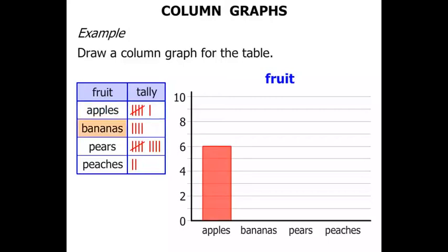Now for bananas you can see there's 4 in the tally. So above bananas in our graph we draw a column that goes up to the number 4.